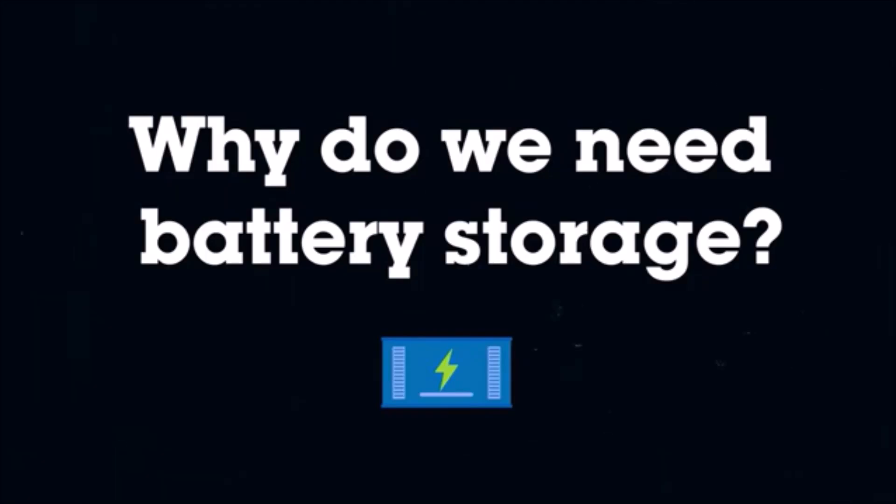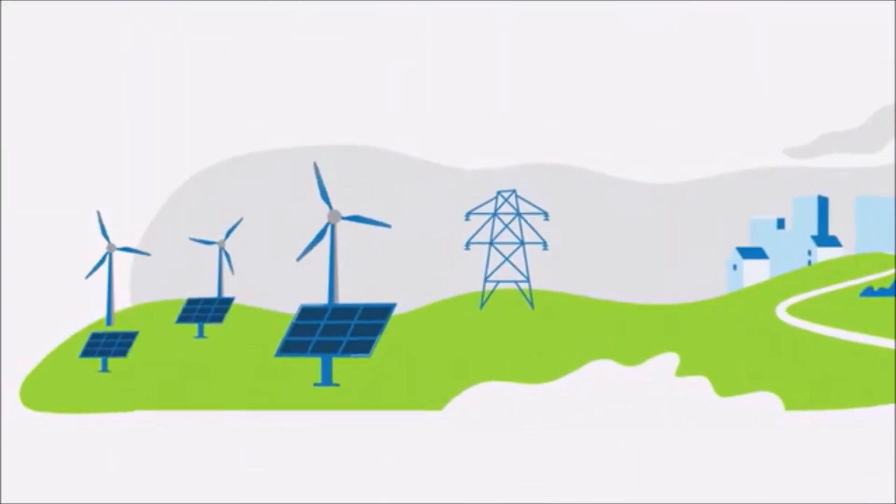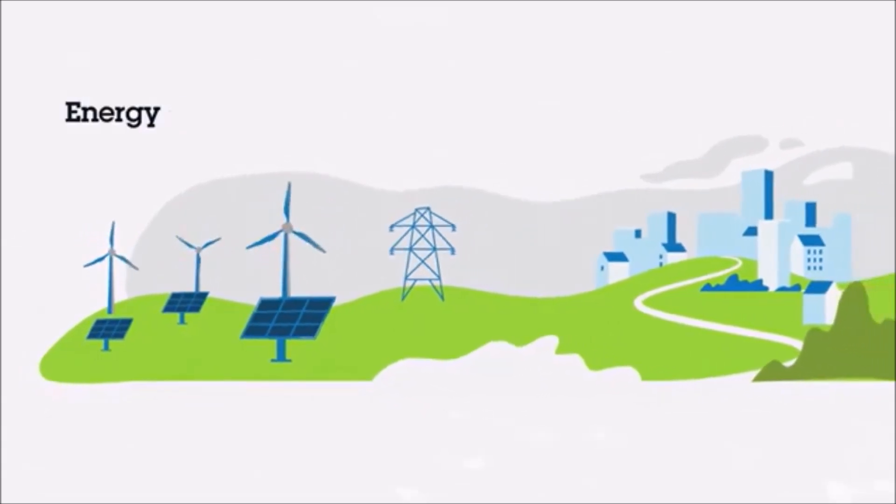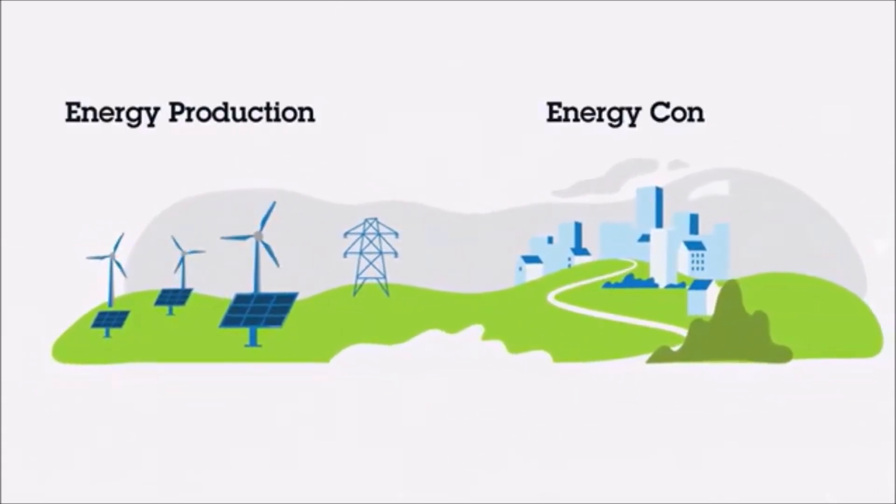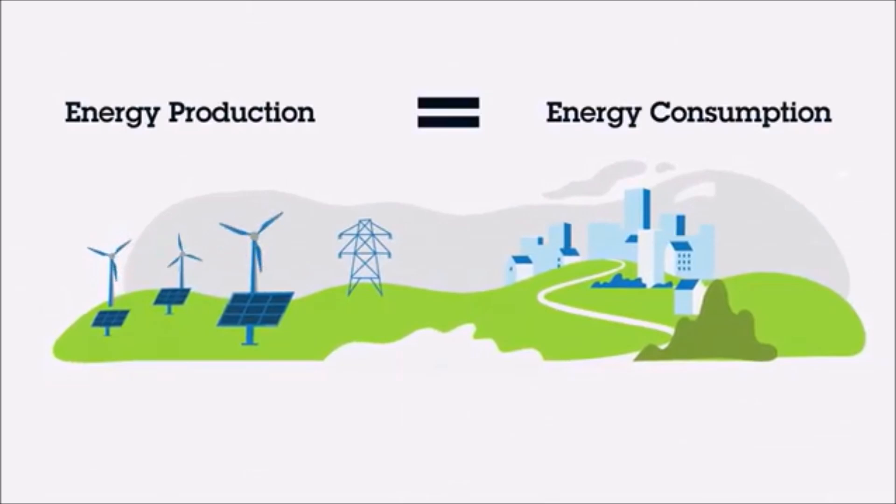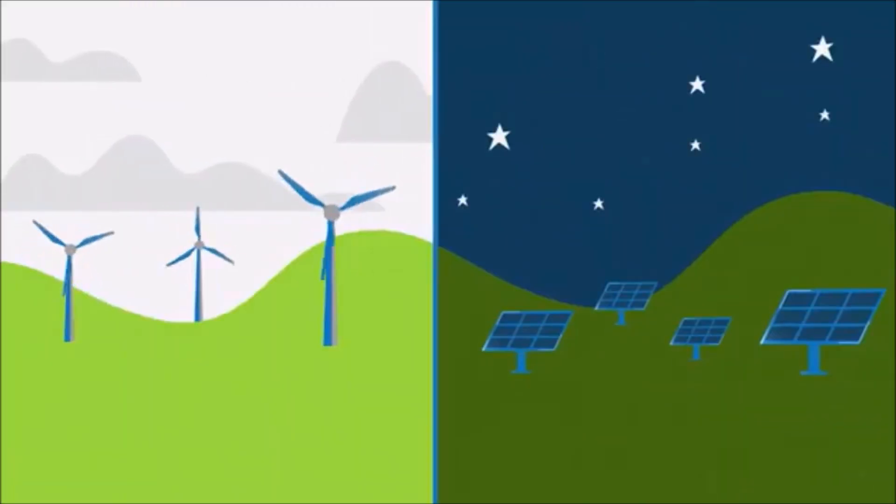Why do we need battery storage? The national grid needs to balance energy production with consumption to prevent overloading or power cuts. Energy from some renewable sources can be intermittent depending on the time of day and what the wind is doing.